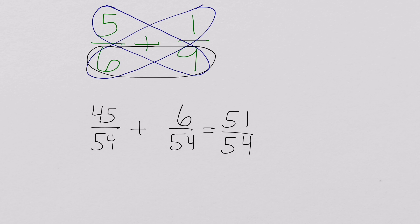We cannot leave this the way it is, because it is not in lowest terms. So let's figure out how to simplify it. To simplify this, we would have to find what is the greatest common factor that 51 and 54 both share.